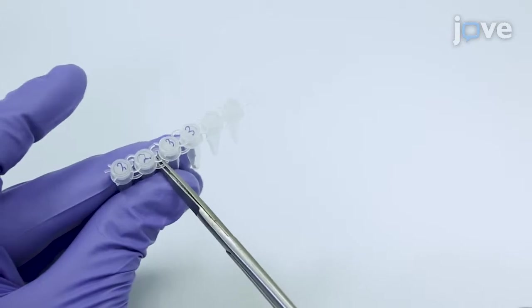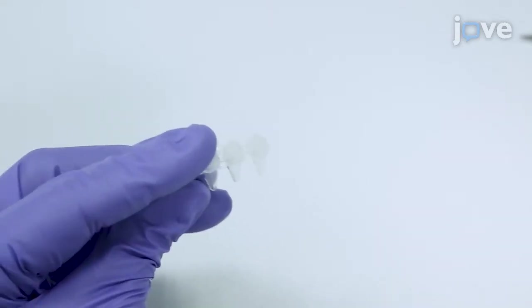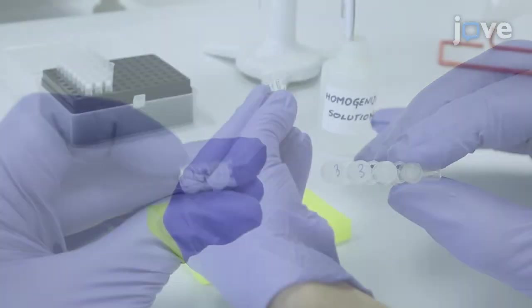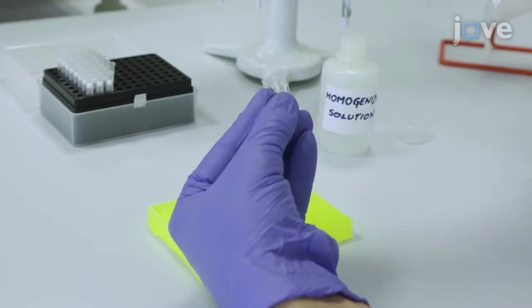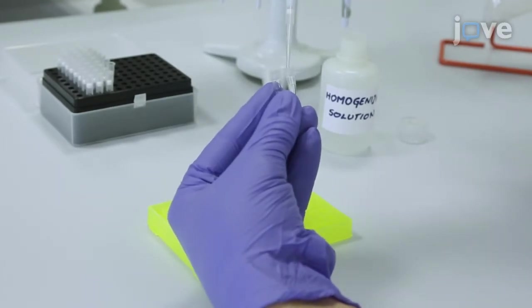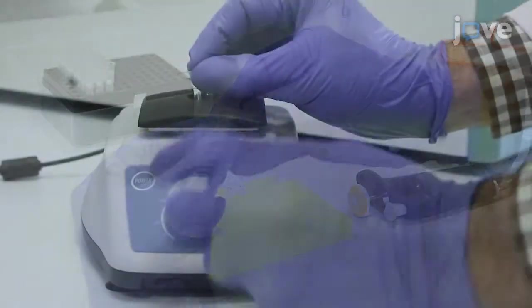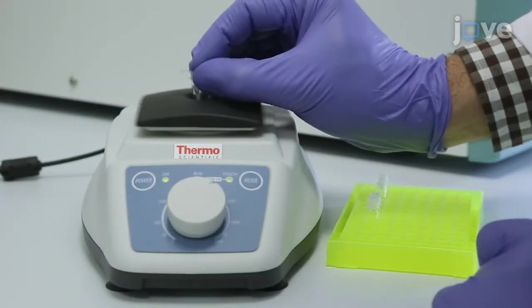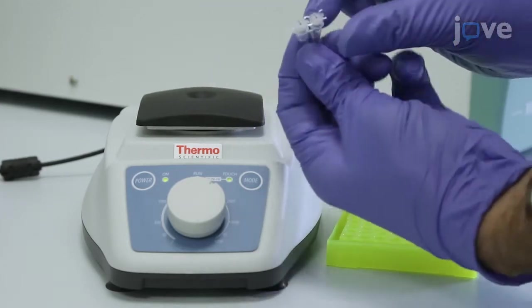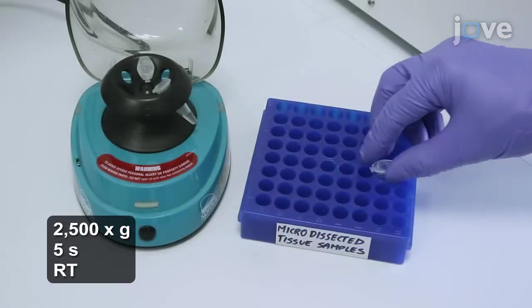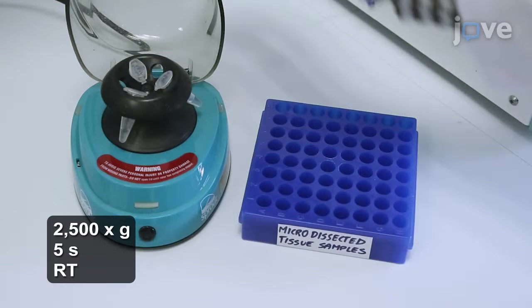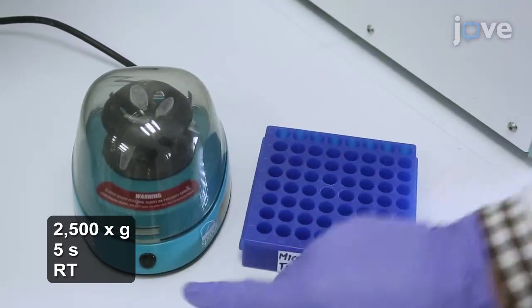Then proceed with lysing the tissue samples. For the lysis, apply 2.4 microliters of homogenizing solution per square millimeter of tissue area in each sample. Then vortex the samples for 10 seconds at maximum speed. Next, spin down the samples for 5 seconds at 2500 G.